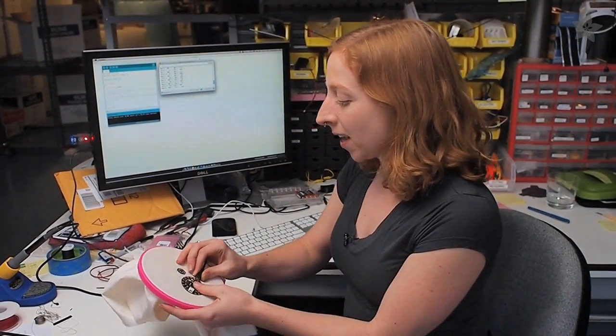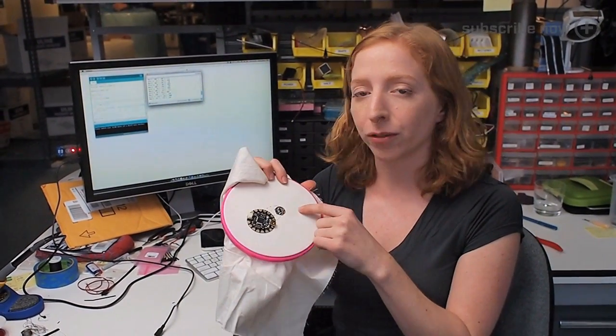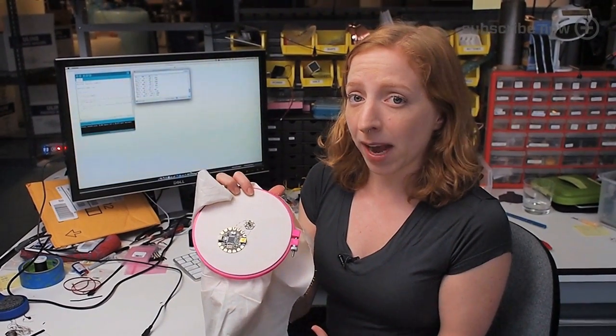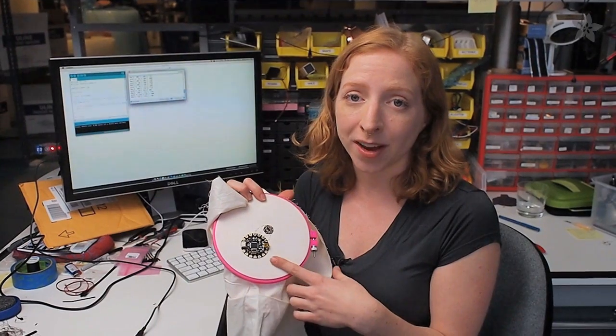The other cool thing about these I squared C sensors is you can chain them together. You could add on our Flora luminosity sensor and even something like our LED matrix backpacks and hook them all up to each other without using any more pins on your Flora.